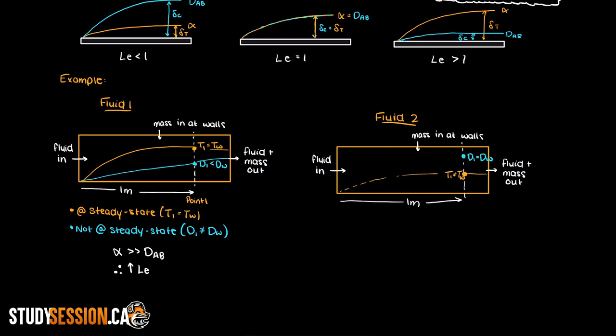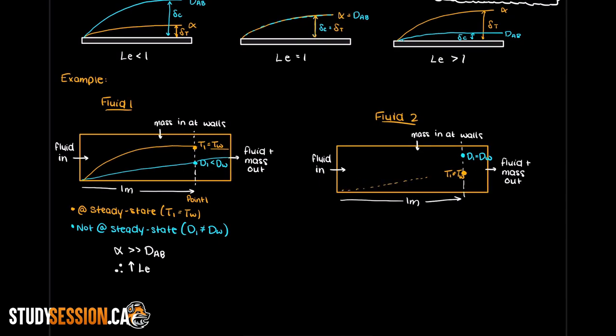At our point of interest the concentration of our diffusion component is approximately equal to that at the wall whereas the temperature is still quite a bit lower than that at the wall. This tells us that the fluid, fluid 2, is much better at transferring mass than thermal energy and will therefore have a low Lewis number.